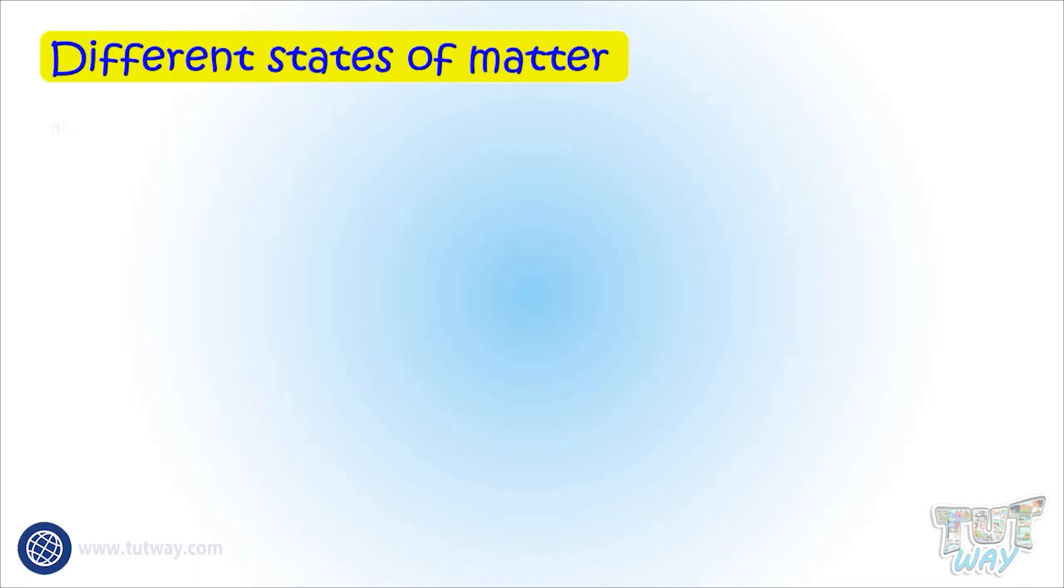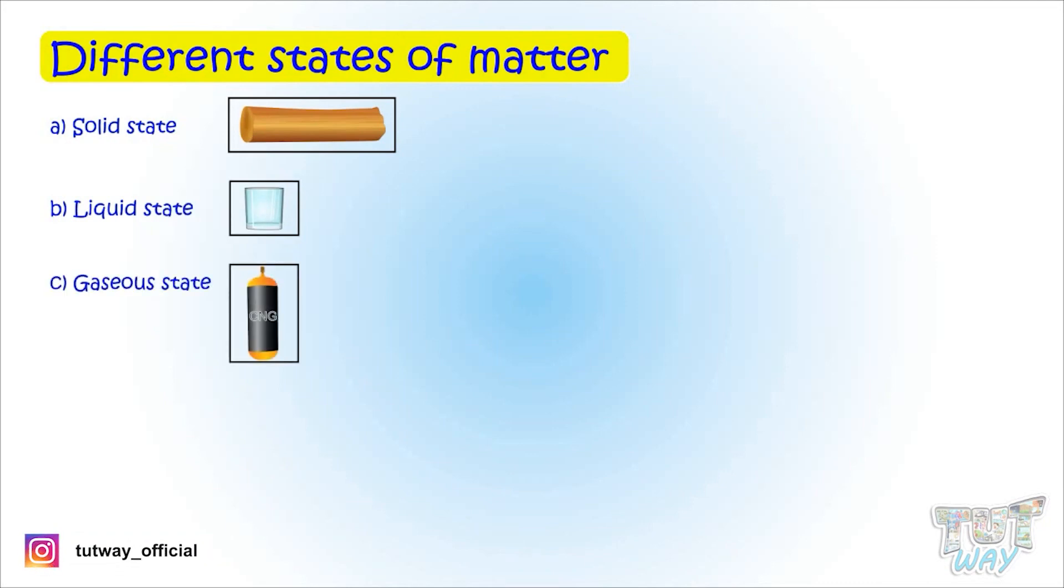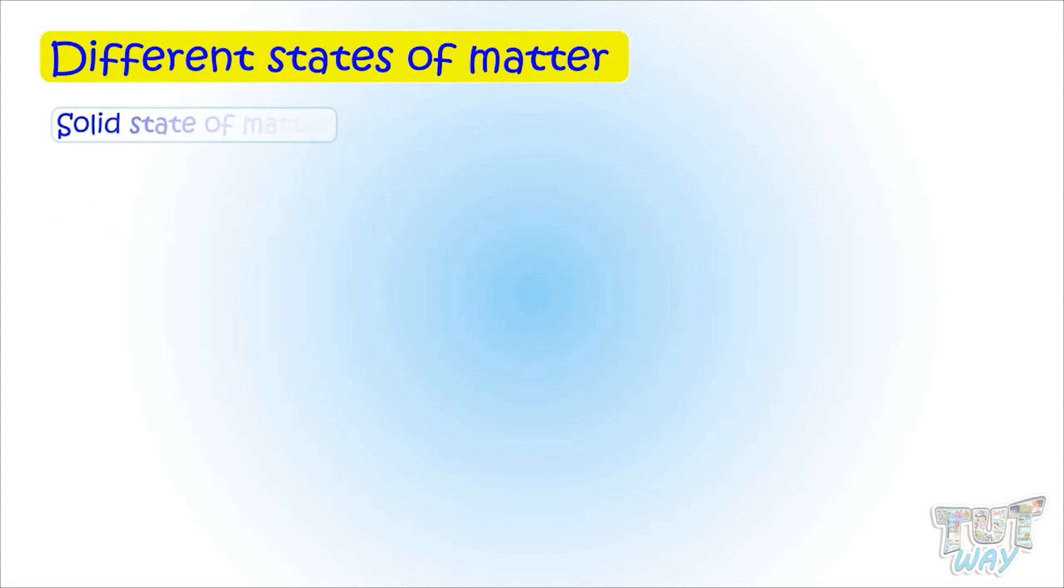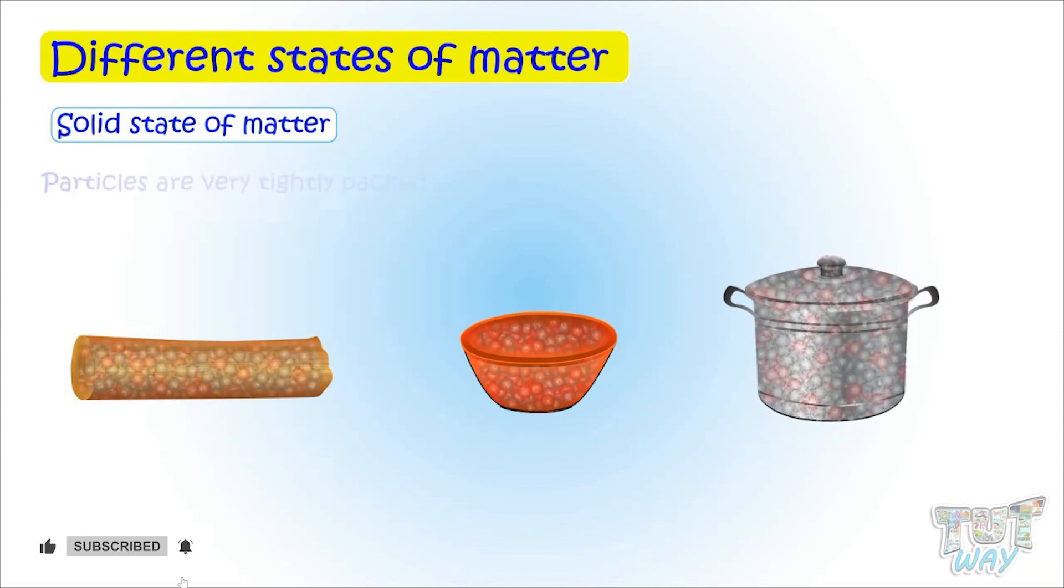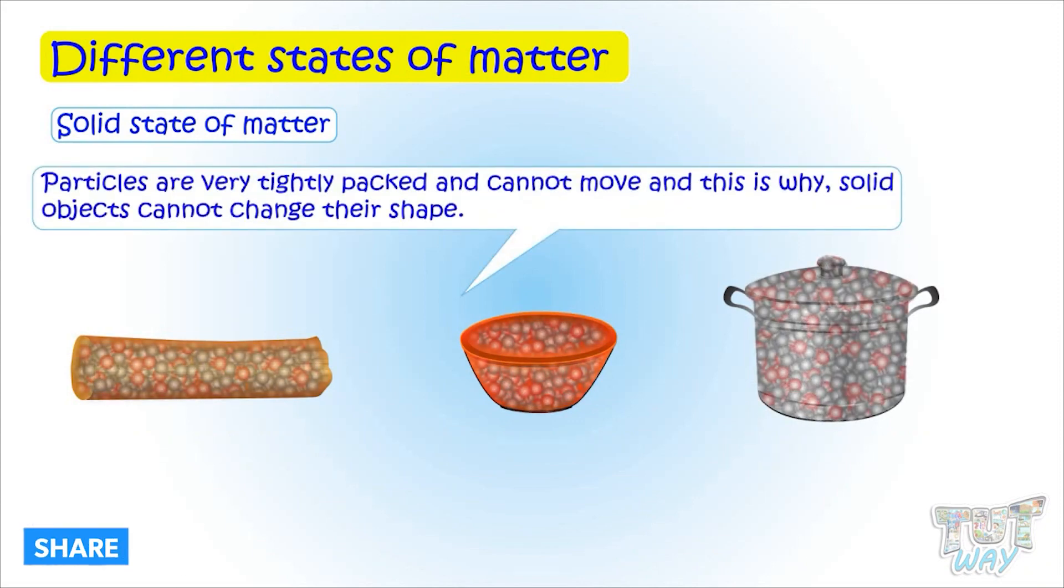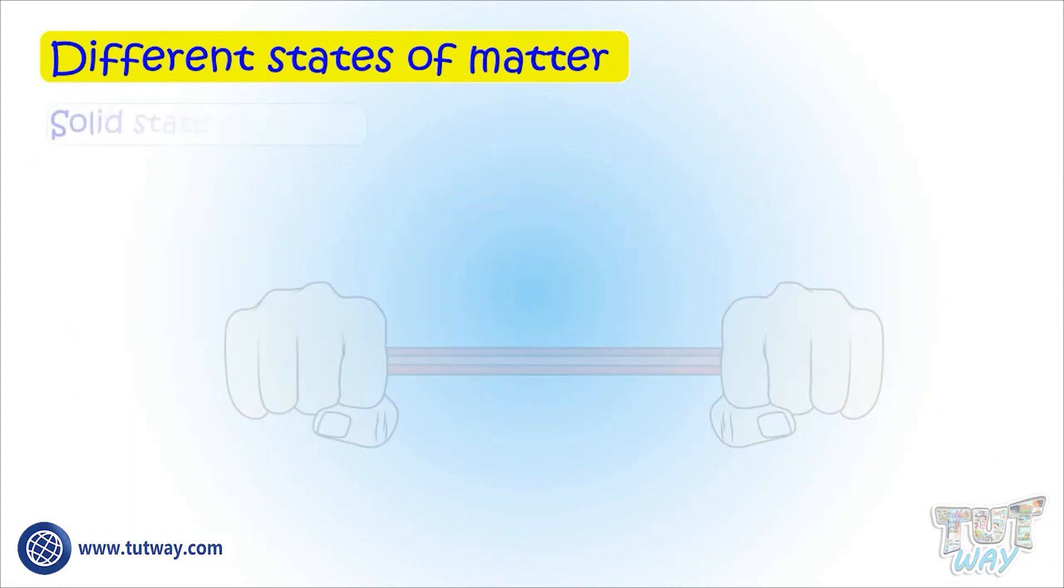First, let's learn about the solid state of matter. In solid objects like wood, plastic, and steel, the particles are very tightly packed and cannot move at all. That is why solid objects cannot change shape and remain in the same shape unless a large force is applied to make them change.